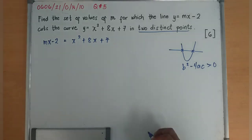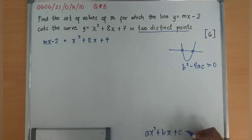So it will become mx - 2 = x² + 8x + 7. And remember, I have ax² + bx + c = 0, so that I can find out what is a, what is b, what is c.